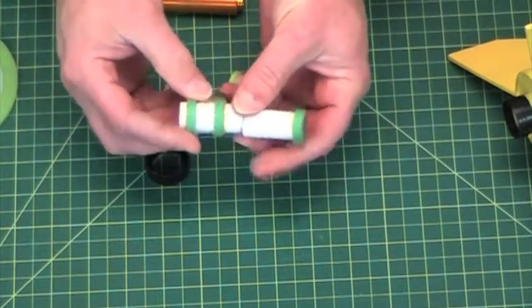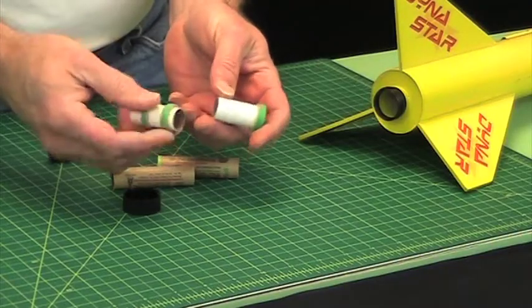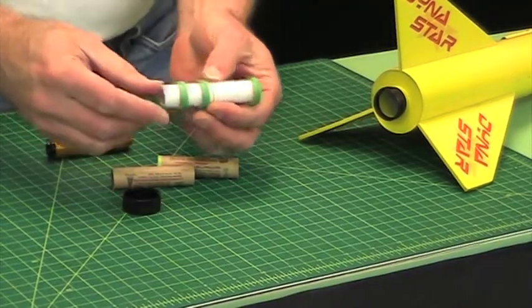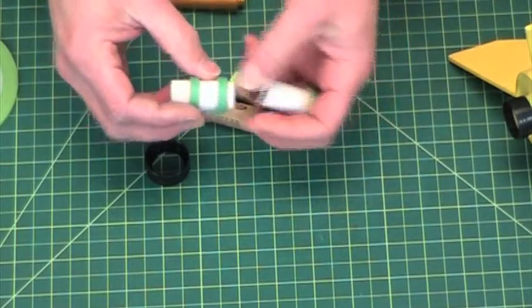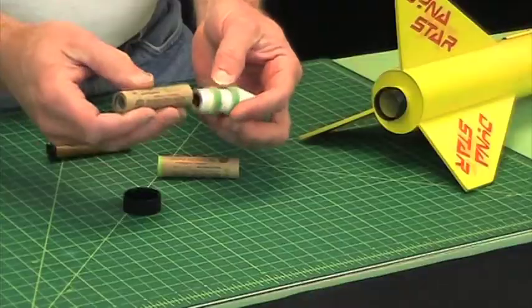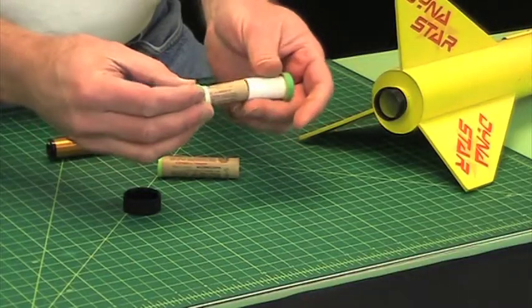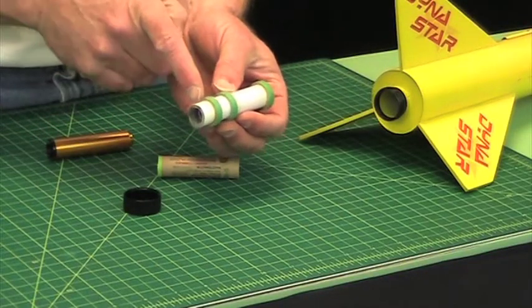And it looks kind of funny but basically it works really sweet. This end here is the front end, this here is the back end, so that when you put it together it's designed for an engine hook.